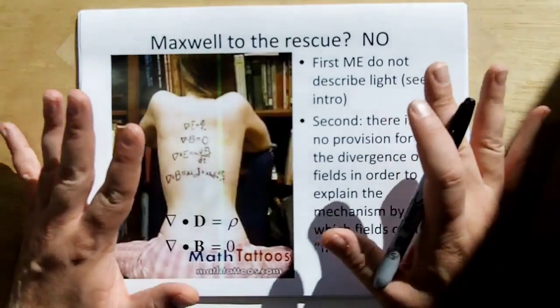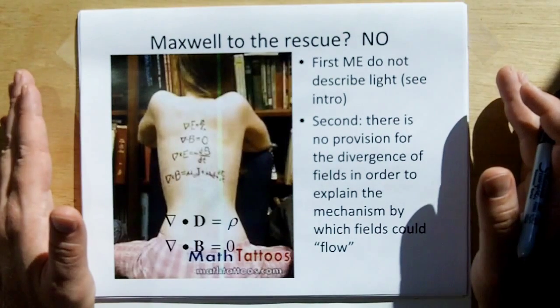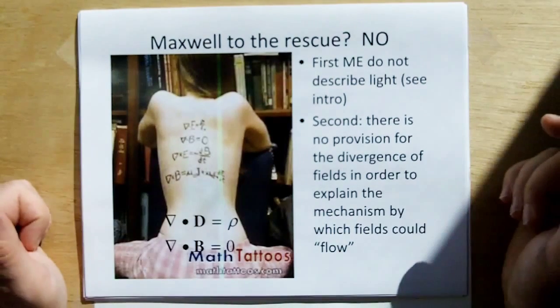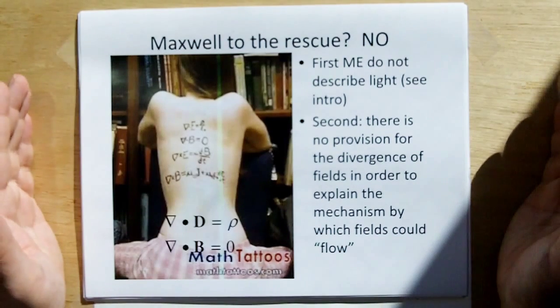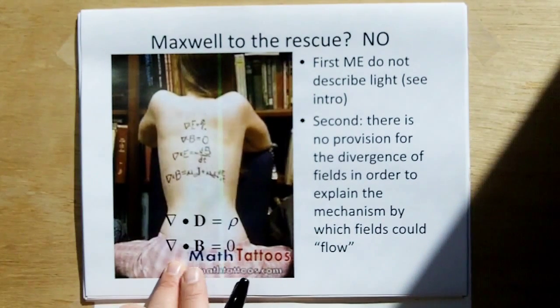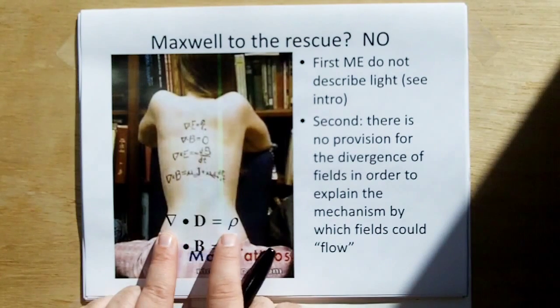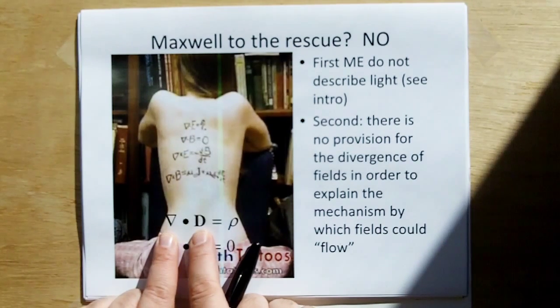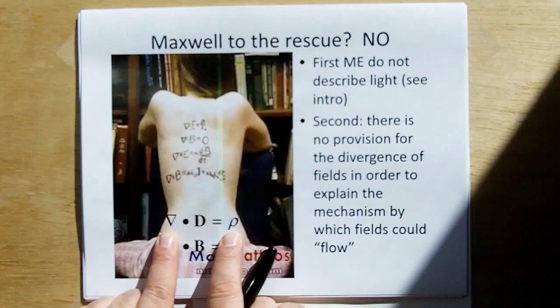Okay, first of all, from the introductory video, I showed you that Maxwell's equations do not describe the behavior of light properly. And secondly, there's no provision in Maxwell's equations for the divergence of fields. And so we can't explain diffraction using field flow. Because if we look at the divergence models from Maxwell's equation, it says that there's no divergence in a magnetic field at all. Here we have only source divergence, which says if we have an electric field diverging, that can only occur if there's sources inside the volume that you're looking at.